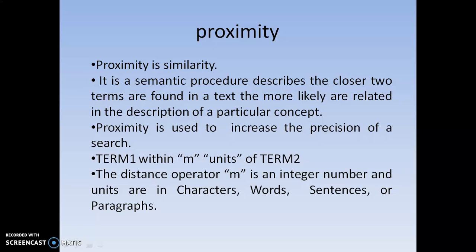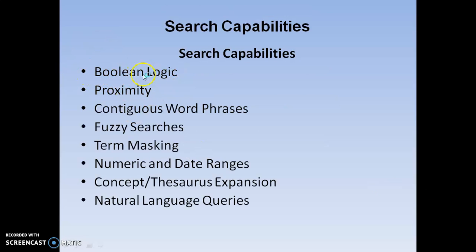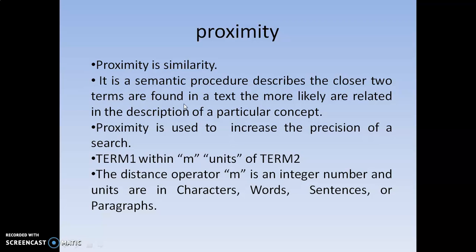Next, we are going to discuss the second one: proximity. The meaning of proximity is similarity. It is a semantic phenomenon which describes the closeness of two terms — where those two terms are equal or nearer. It is intended to increase the precision of the search. Precision means selection of the top relevant items, giving least priority to less relevant items — 100% match is only allowed.